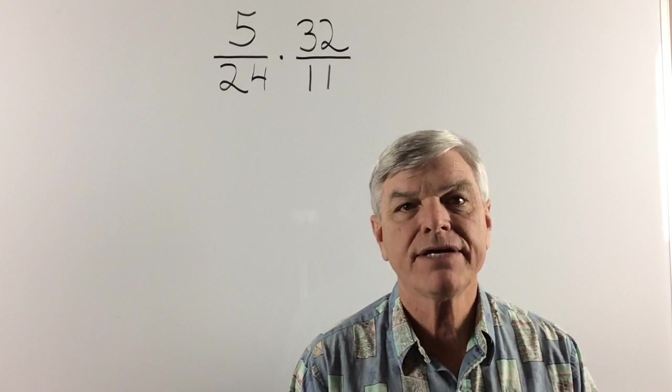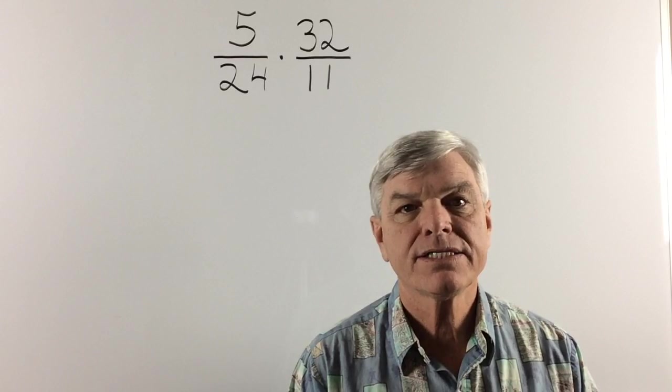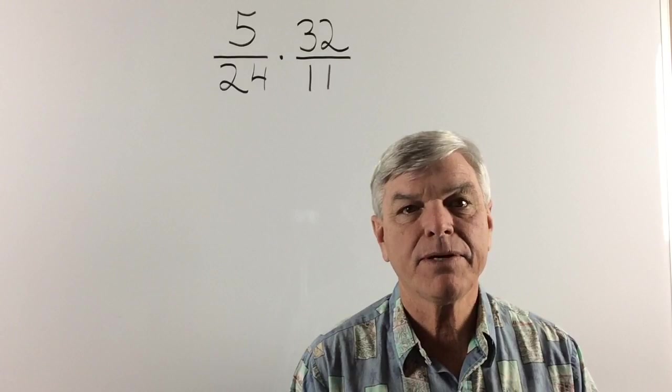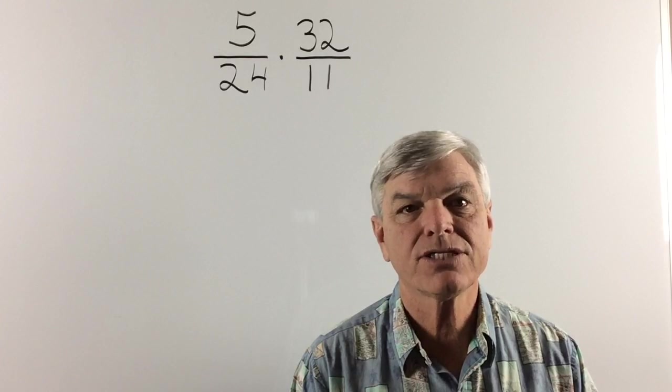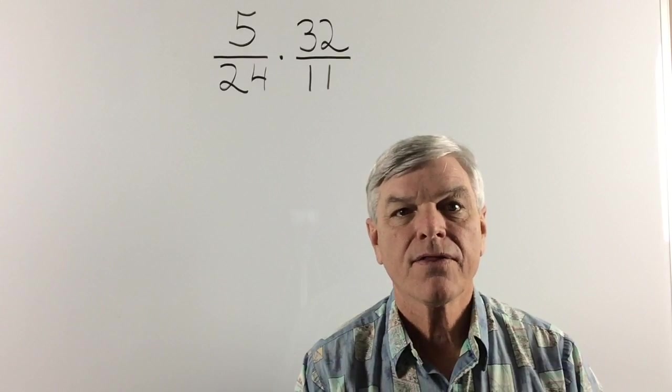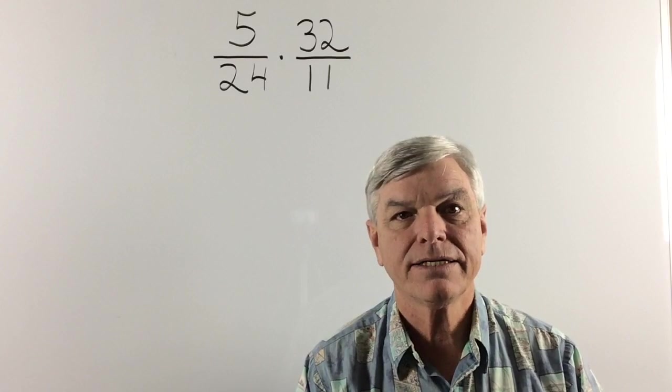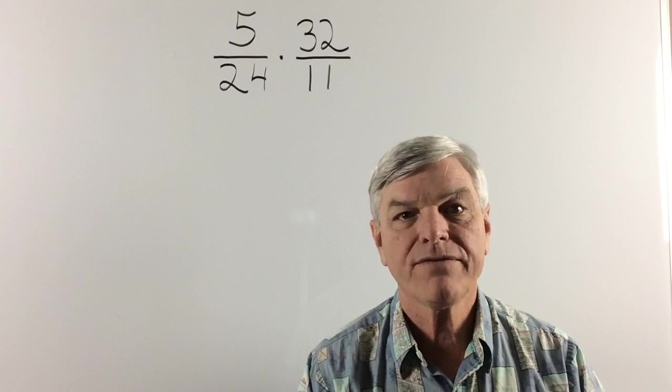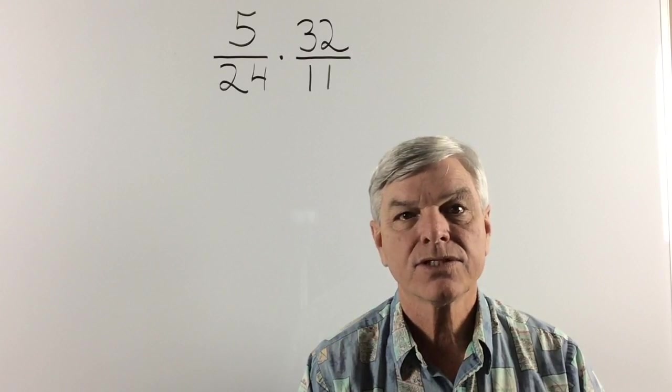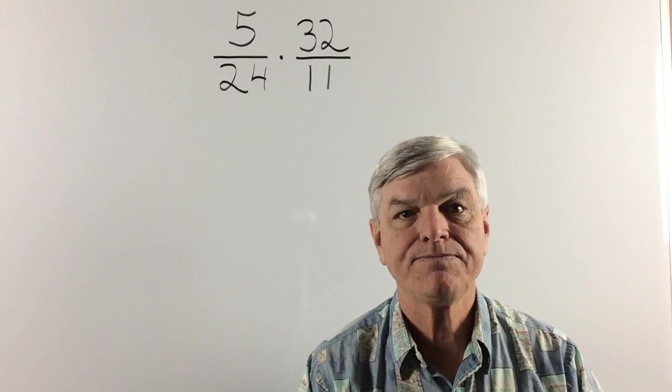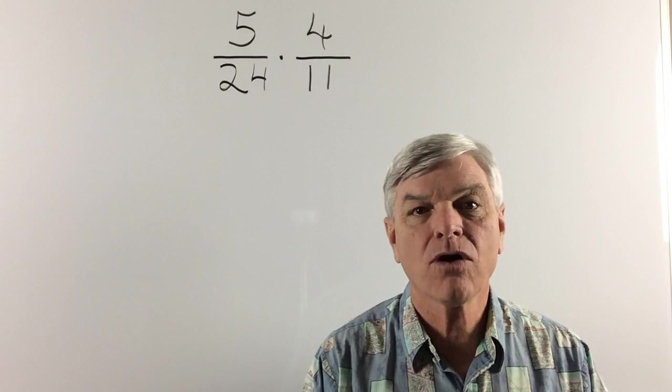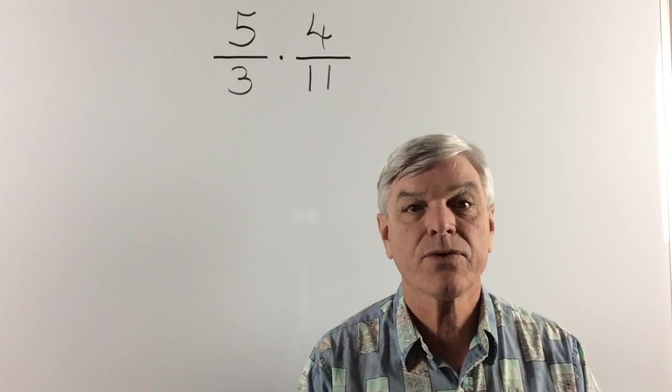Now look at 5 again. And see if 24 can be reduced by 5. It cannot. Can 11 be reduced by 5? It cannot. So let's move over to the 32. Now 32 can be divided by 8. Can any other number be divided by 8? Well, the 24 can. So let's divide 32 by 8. And we have 4. And we're going to divide 24 by the same 8. And we have 3.